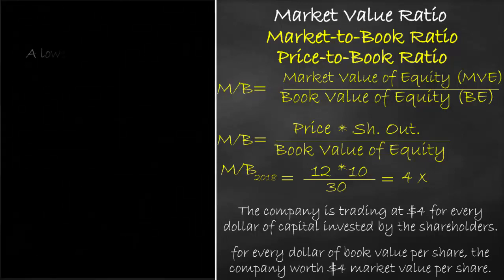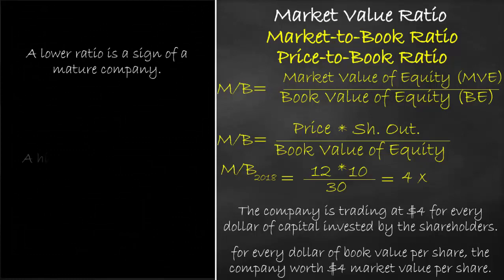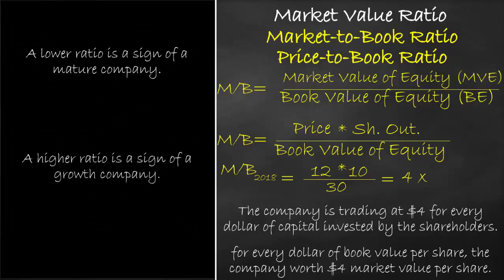The lower ratio is a sign of a mature company. The higher ratio is a sign of a growth company, reflecting higher expected market value per share in the future.